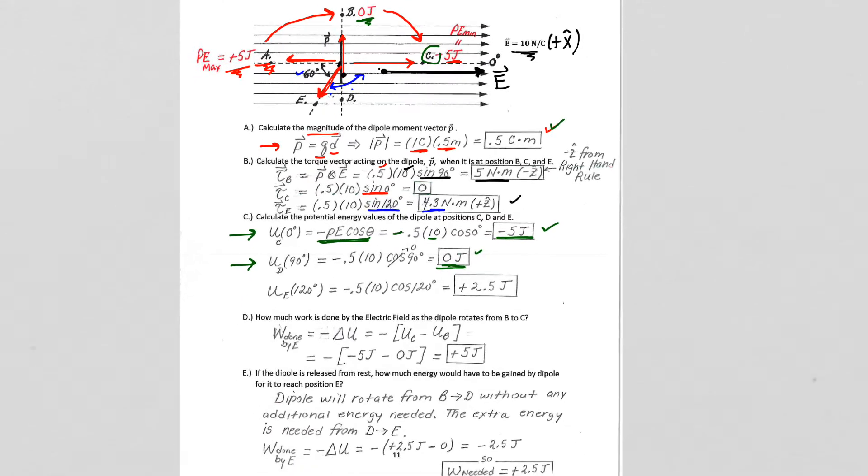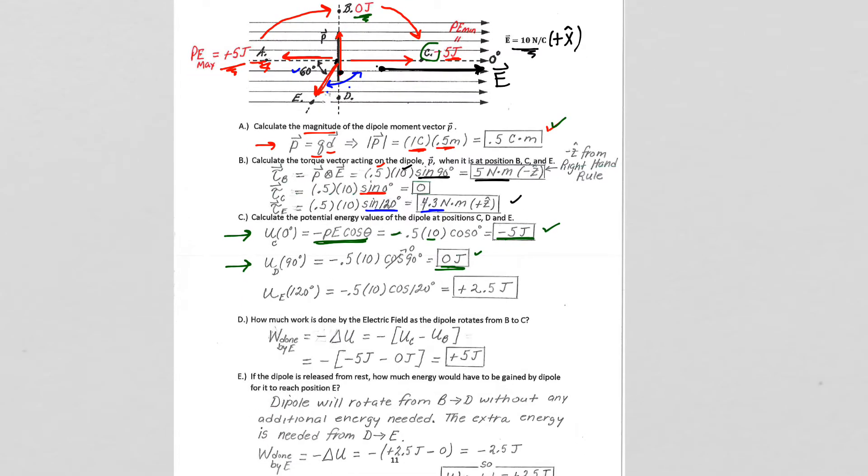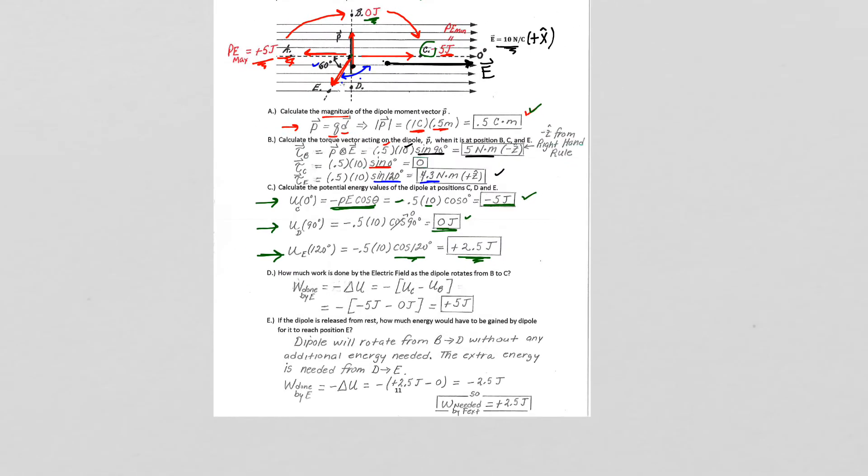Well, the potential energy value, we're just calculating values at the moment, the potential energy value to position E gives us negative 0.510 cosine of 120, so positive 2.5 when it's at position E. So let's see how the problem asks us to kind of make sense of what's going on here.